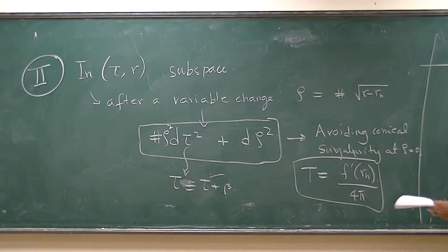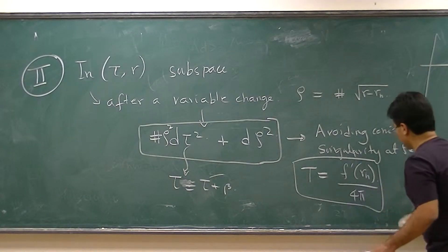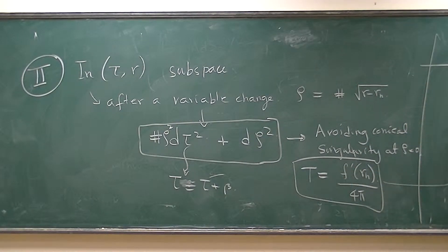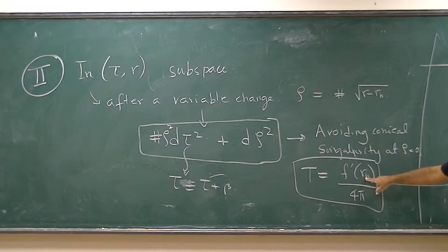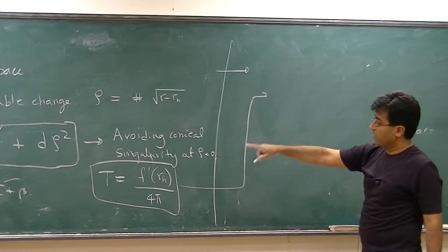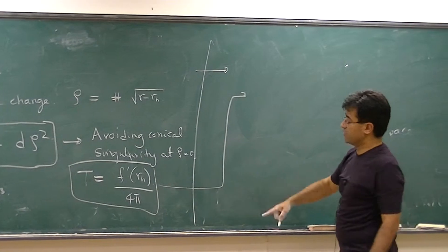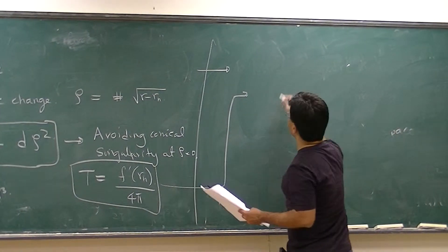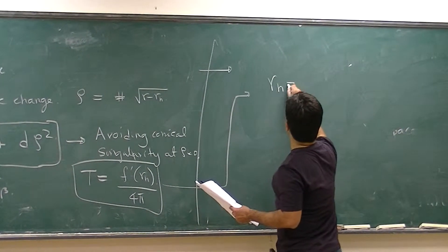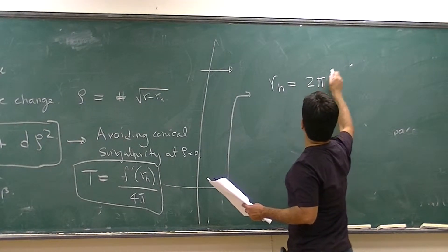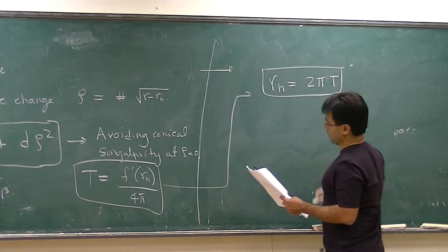There is a kind of punchline here. For our ADS3 black hole metric, if you do this exercise, f is just a quadratic function — it was R squared minus RH squared. And if you take the first derivative of that at RH, you will find that the horizon size is related to the temperature by a simple formula.